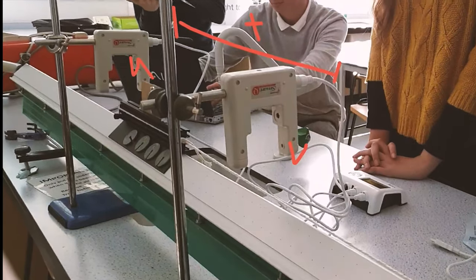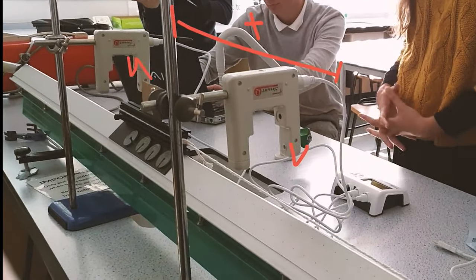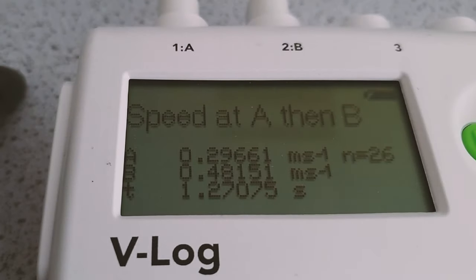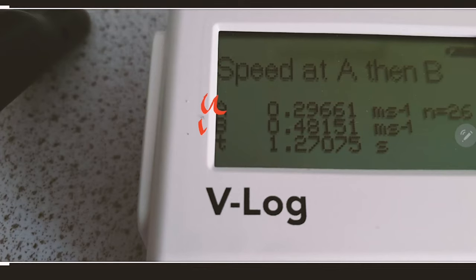U is the initial velocity measured at the first light gate, V is the final velocity, and the logger also returns the time in between the two. So here is the readout. U is the initial speed, V is the final speed, and T is the time between them.